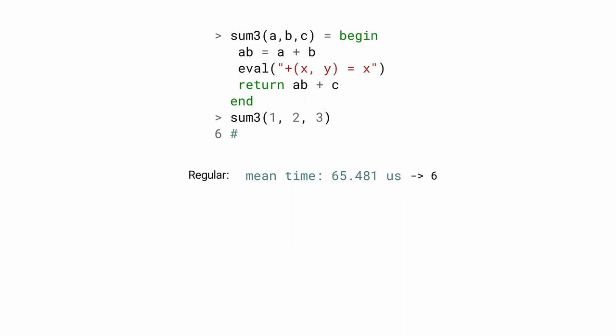There are two ways to do that. The first one is to use eval again to make the call. eval always runs in the latest world age and thus has full access to the method table, including the new definition of plus. However, the code executed by eval is not optimized, so it can be much slower than the regular call.